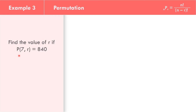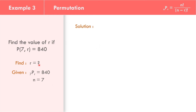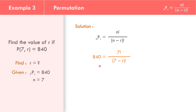Find the value of R if P(7, R) equals 840. First, we need to identify the value of R. The permutations of 7 objects taking R at a time — we have no value for R — equals 840. Our value of N is 7. Using the formula: permutations of N objects taking R at a time equals N factorial all over N minus R factorial, so 840 equals 7 factorial all over 7 minus R factorial. 7 factorial equals 5,040 — that is 7 times 6 times 5 times 4 times 3 times 2 times 1.